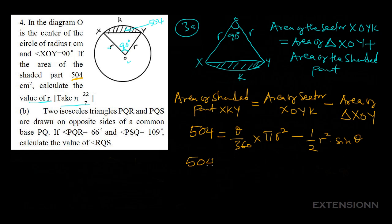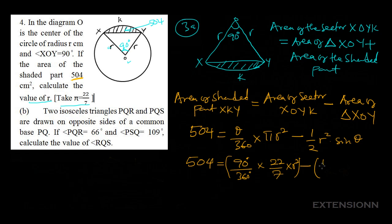So substituting back, we have 504 equals theta — which is 90 degrees — over 360 degrees, times pi which is 22 over 7, times R squared, minus the bracket: 1 over 2 times R squared times sine 90 degrees.